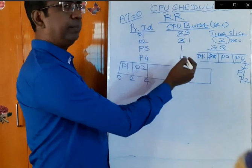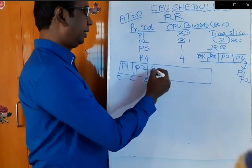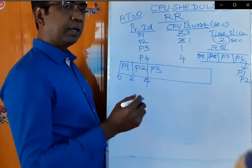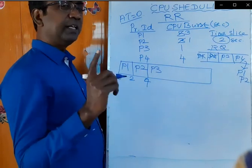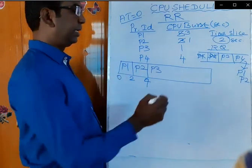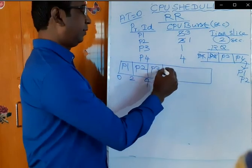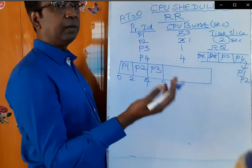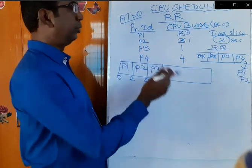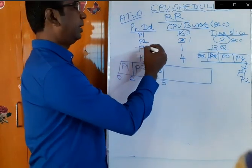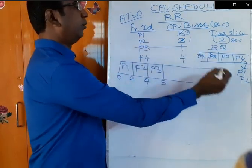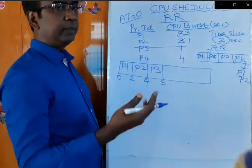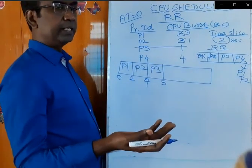Now P3 will be given 2 seconds — P3 enters and the maximum allotted time is 2 seconds, but it needs only 1 second. So after 1 second, it will come out of the CPU. Since P3 has completed its work, it will not re-enter the queue.